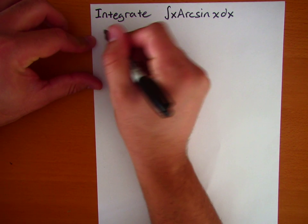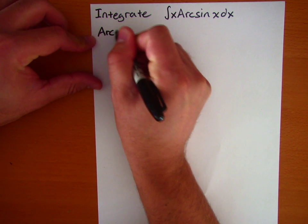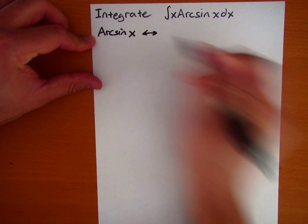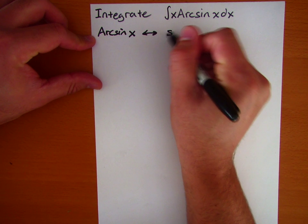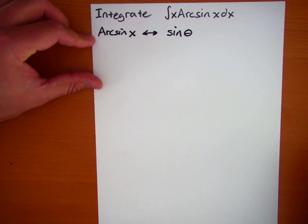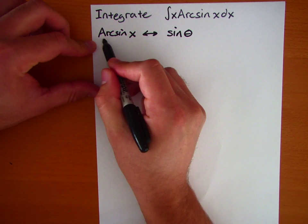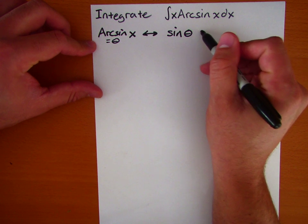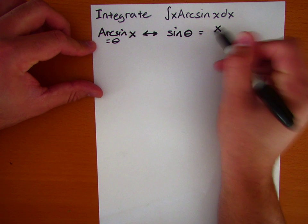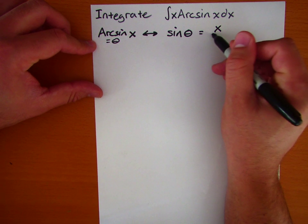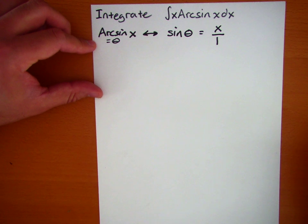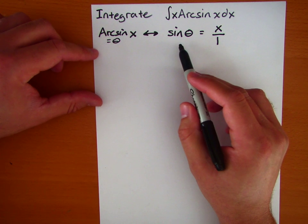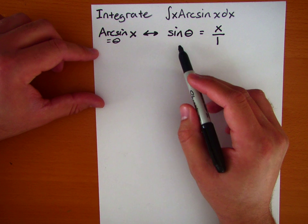Arcsine of x corresponds to — it is the inverse of sine theta. So arcsine of x is equal to theta, and sine of theta is equal to x, or x over 1. Because remember, all trigonometric functions like this are a ratio of sides of a right triangle.